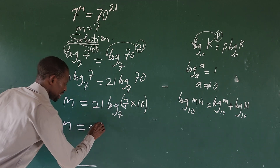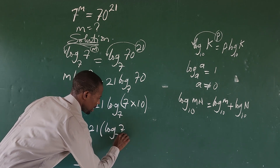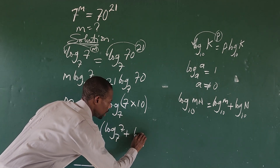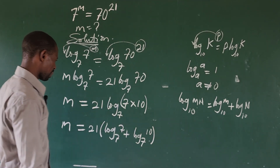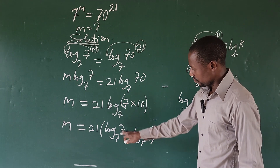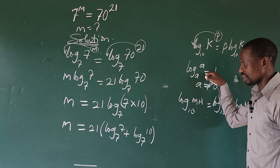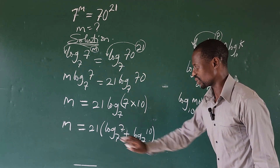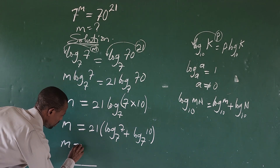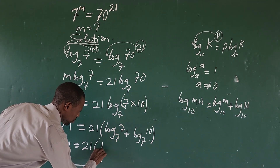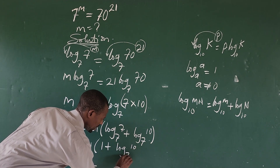Applying the product law, we write m equals 21 times [log base 7 of 7 plus log base 7 of 10]. We can see that log base 7 of 7 appears again, and that equals 1. So the whole expression gives us m equals 21 times (1 plus log base 7 of 10).